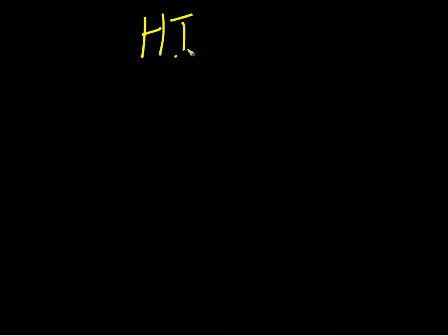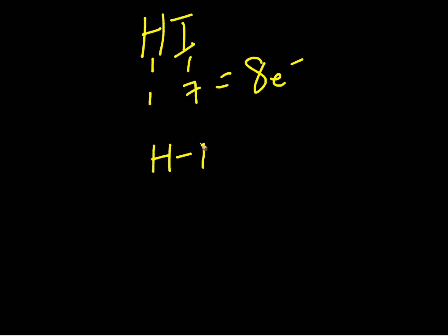Let's do HI. Hydrogen is one, iodine is seven, so we're going to have eight electrons total. We can only have hydrogen connected to iodine with a single bond because hydrogen can only have two electrons around it. To get our structure to eight, we're going to have to use three sets of lone pairs: two, four, six, eight — eight electrons in our structure. Everything satisfies the octet rule. We're set.